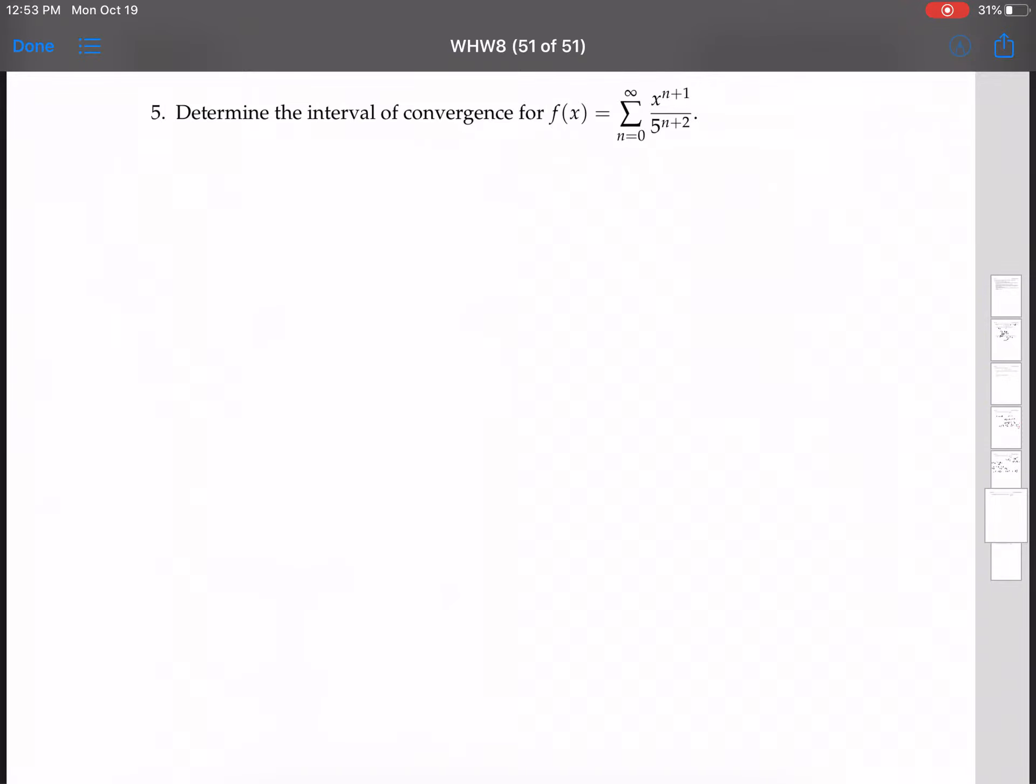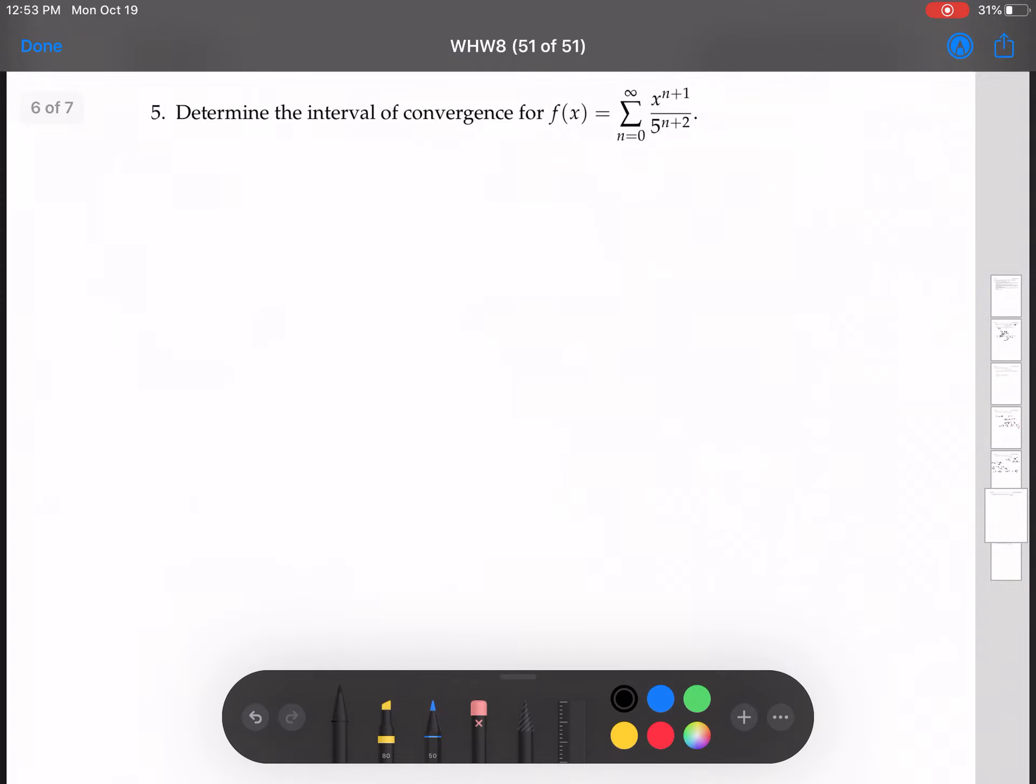This one is also geometric. You just got to make it look like it. So let's just pull off the rule: x to the n plus 1 over 5 to the n plus 2.